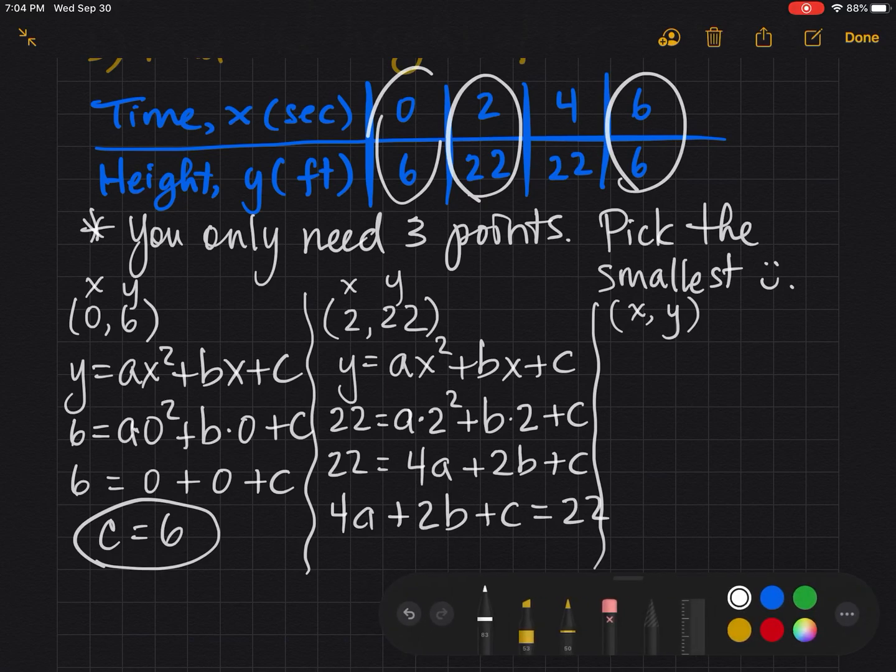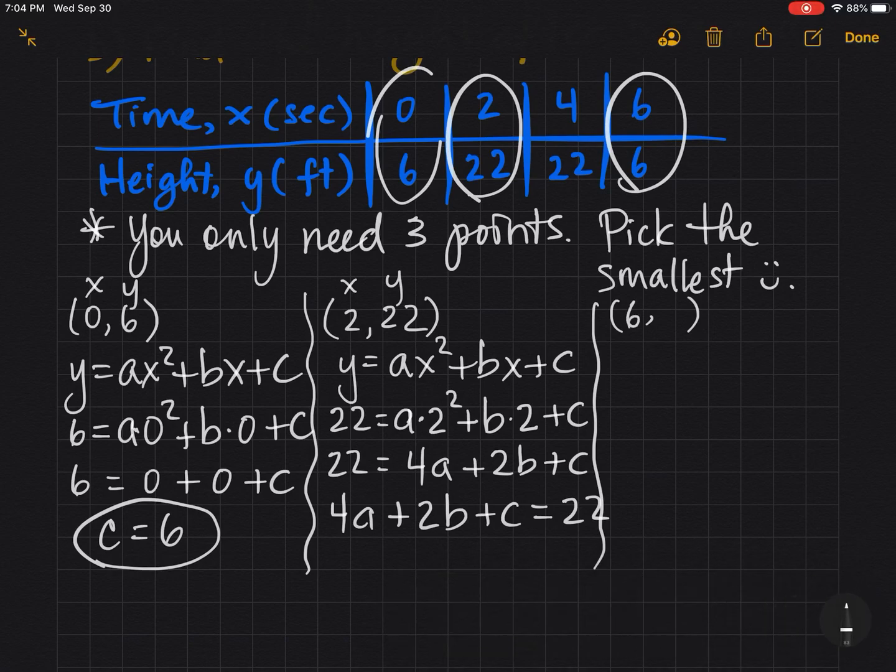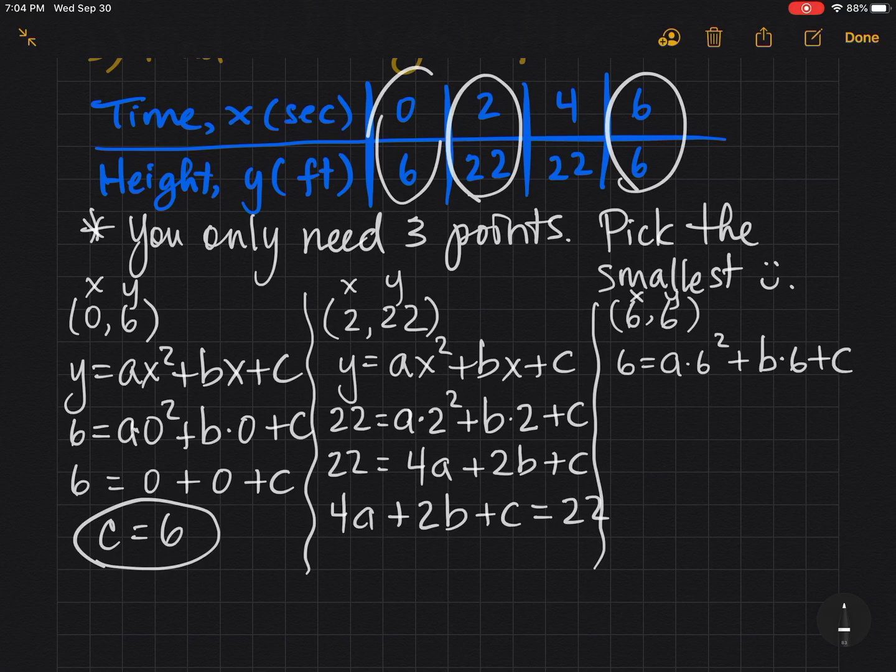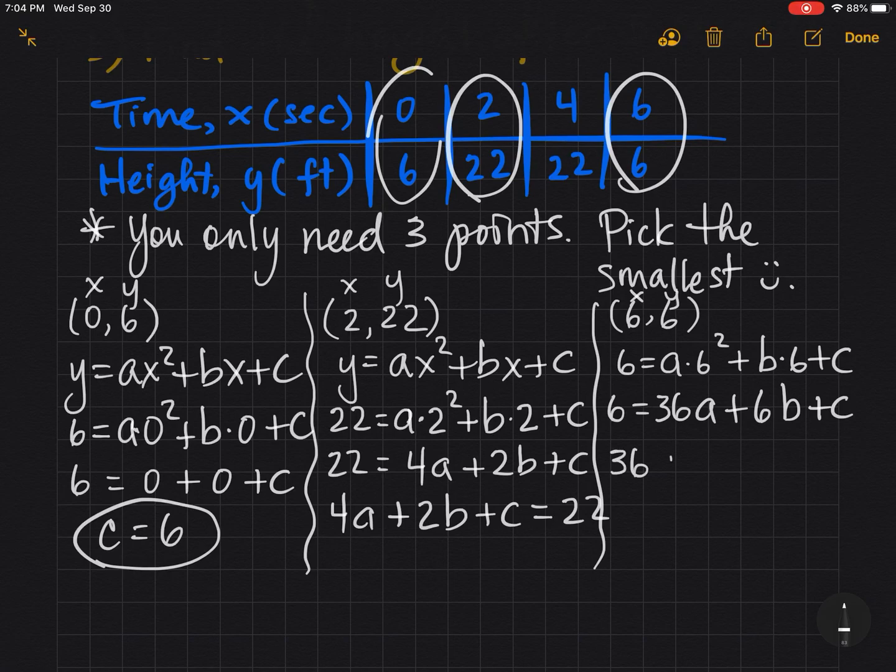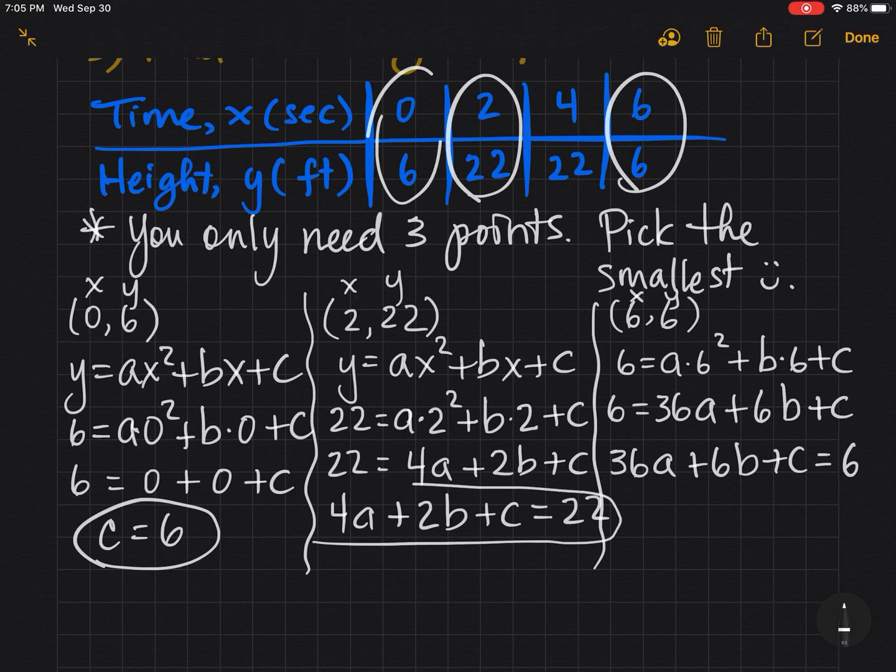Last but not least, our third point is (6, 6). So I'm plugging in x is 6 and y is 6. So 6 = a(6²) + b(6) + c. You really want to stay organized with these problems. And again I like for my equations to be turned this way. You don't have to do that.